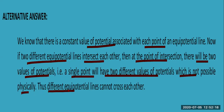This is not possible, so physically equipotential lines cannot cross each other. The question is: can two equipotential lines cross each other or not? They cannot cross each other, because there is a constant value of potential associated with each point of an equipotential line. If two equipotential lines intersect, at the point of intersection there will be two values of potential, which is not possible — a single point cannot have two different values of potential. So physically it is not possible; equipotential lines cannot cross each other.